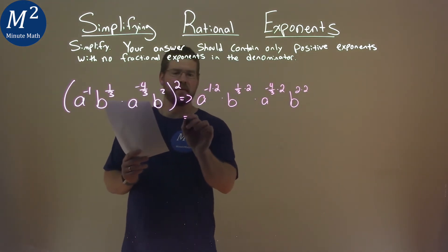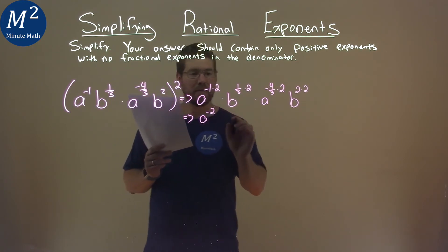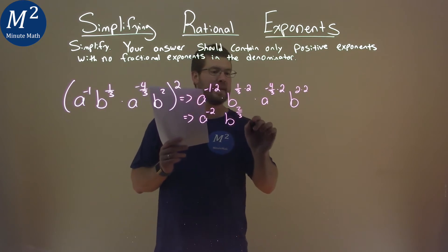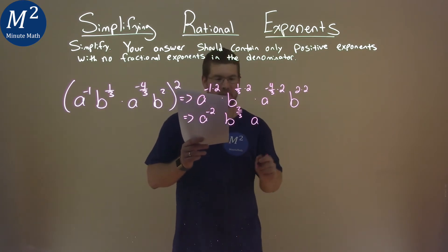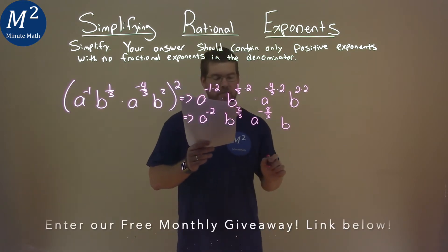Well, now let's simplify where we can. This becomes a to the negative 2 power. We have b to the 2/3 power, a to the negative 8/3 power, and b to the 4th power.